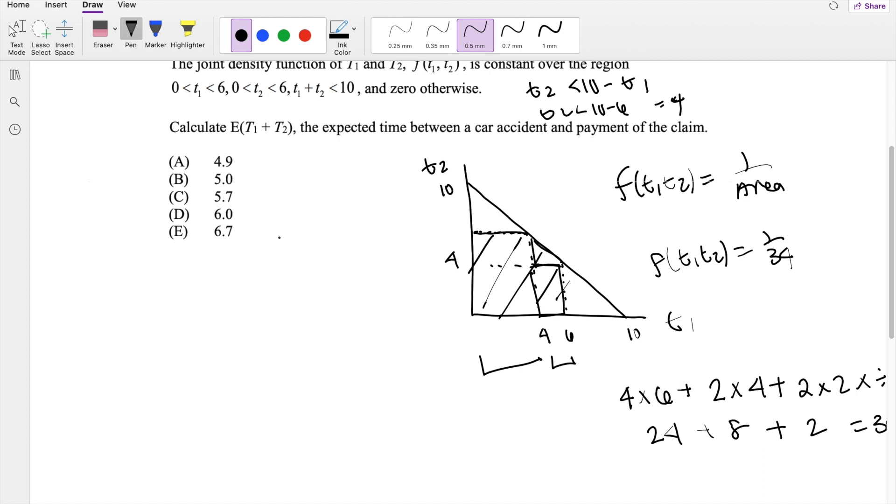Alright, moving on. I'm actually going to erase my little line here. We also know that the expected value of t1 plus t2 is symmetric, as in I can switch the range here and it's going to be the exact same.